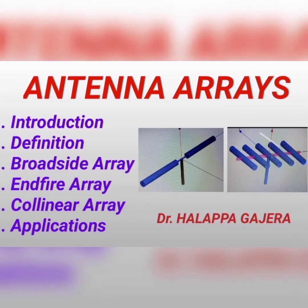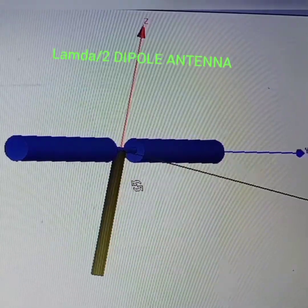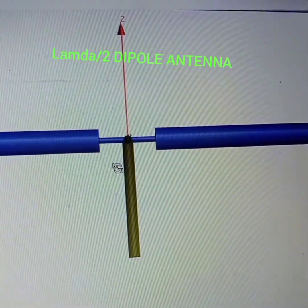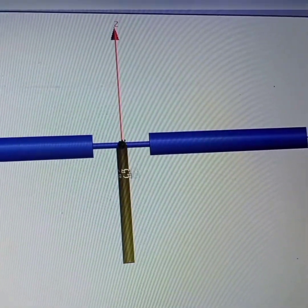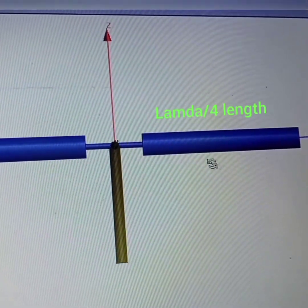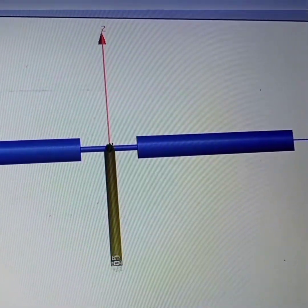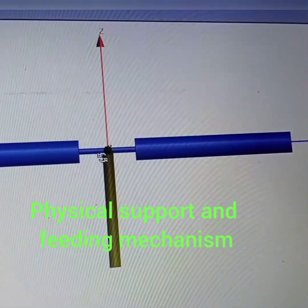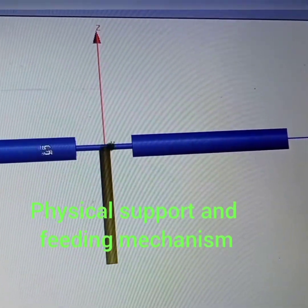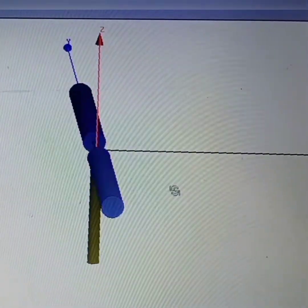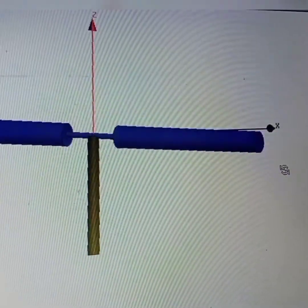Why is an array needed? See, this is the single element dipole antenna. As we know, there are two arms. One is lambda by four length, another one is also lambda by four length. And this dipole element is properly supported by some physical structure with proper feeding. This is the lambda by two dipole antenna.